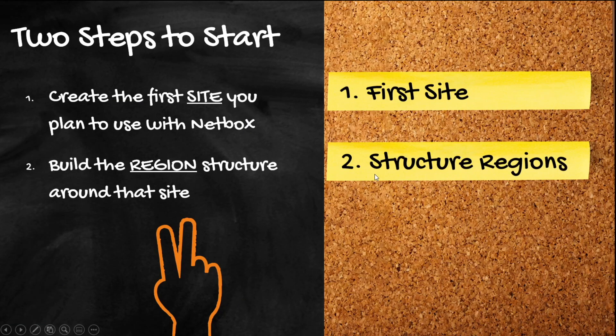Here's what I want you to do: go get started with NetBox. If you've got it installed, go create the first site you plan to use. We created My First Site — you can either rename that one or create a brand new site. Then build the region structure around that site. Maybe you're small and only want to use NetBox for your little small office — that's fine, but build the region structure anyway so you know the feature. Whether you're in Arizona, Michigan, or Australia, create that structure so it's there and you can see it and experience it. Now you know how to get started with the first structure. It's that simple.